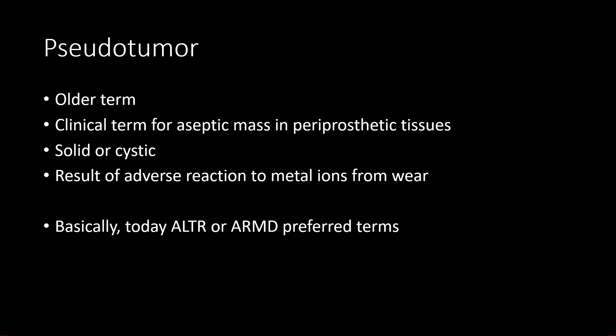The term pseudotumor is actually an older term from when there was less understanding of what is actually going on in metal-on-metal systems. It was first used as a clinical term for aseptic masses in the periprosthetic soft tissue. They can be either solid or cystic and are believed to be a result of adverse reaction to metal ions from wear. Today, pseudotumor should not be used anymore, as suggested in multiple publications — the preferred terms are ALTR or ARMD.